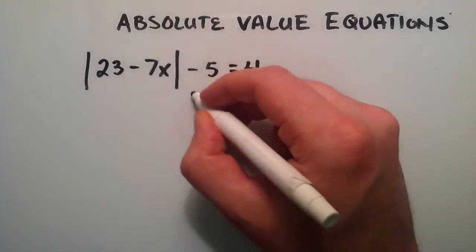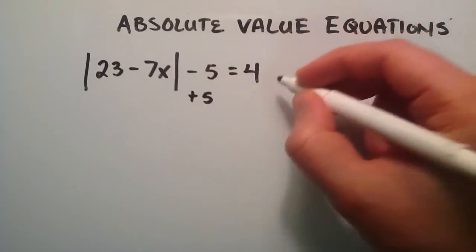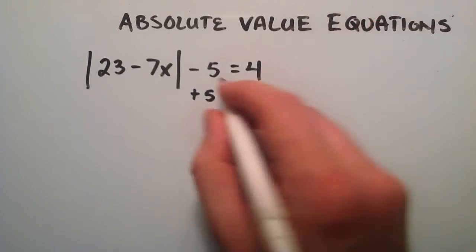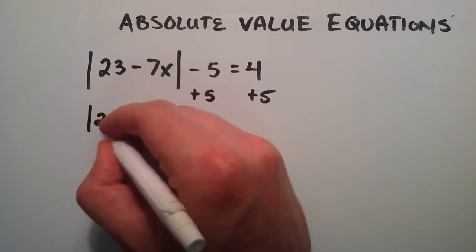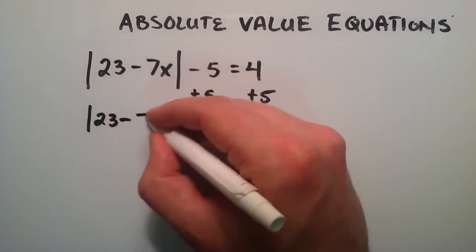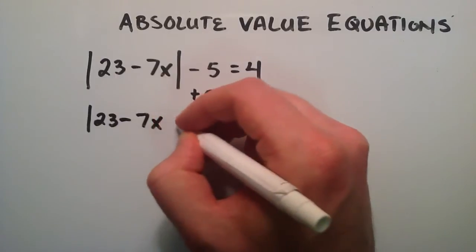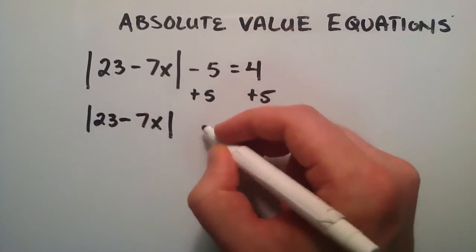So we're simply just going to add 5 to each side here to make that happen. A negative 5 and a positive 5 give us 0, leaving us with only the absolute value portion over here. So we have the absolute value of 23 minus 7x on the left hand side now.